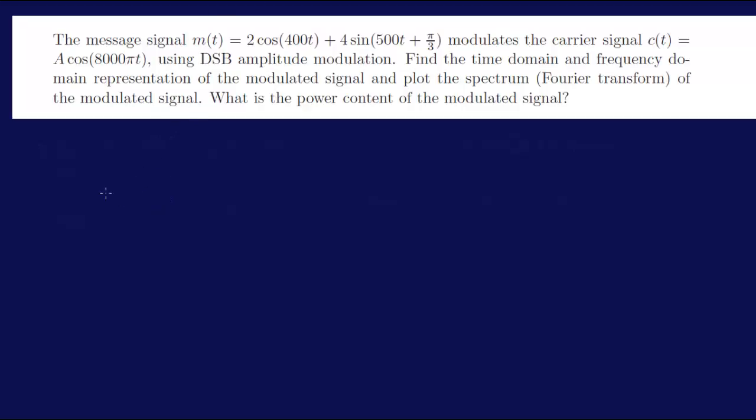I'm giving here a message signal M(t) and a carrier signal C(t). M(t) modulates C(t) using DSB Amplitude Modulation, Double Sideband Modulation.